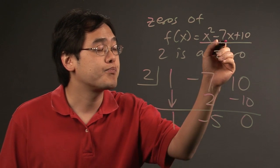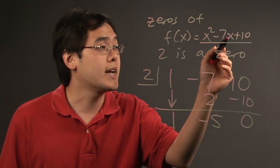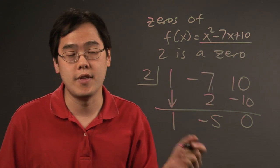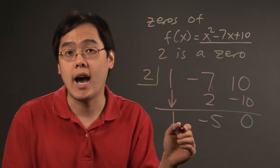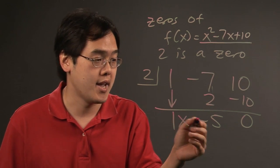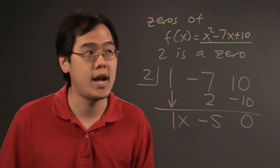What this represents is going to be the next polynomial of the next degree. If you start out with x squared, the 1 is going to represent the next lower exponent, which is x, and the minus 5 is going to be your constant.